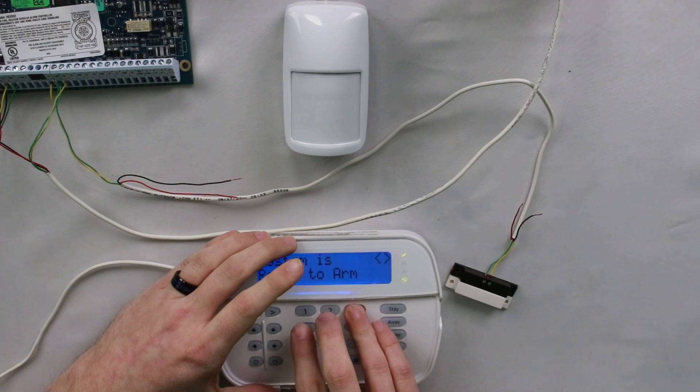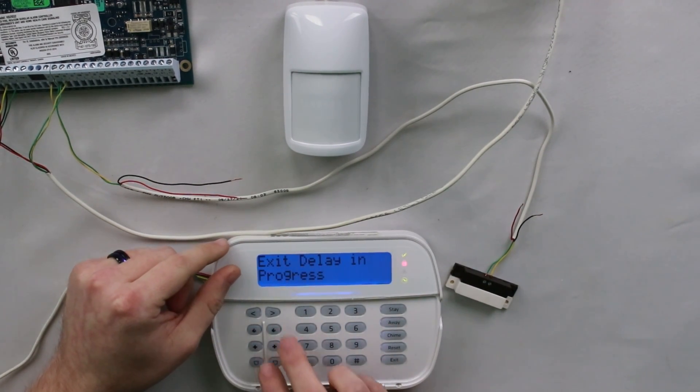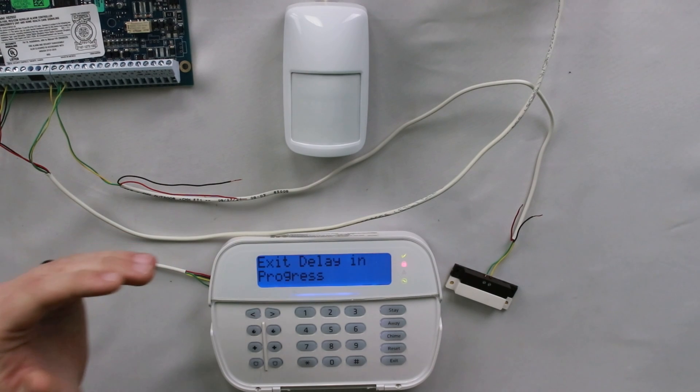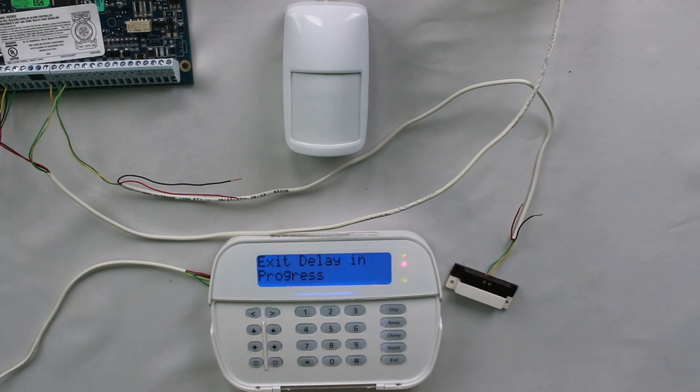So now if I arm, it's just going to say exit delay in progress. There's no warning bypass is active because it's not going to bypass anything. The only thing it has to worry about is the perimeter, which should always be armed period.